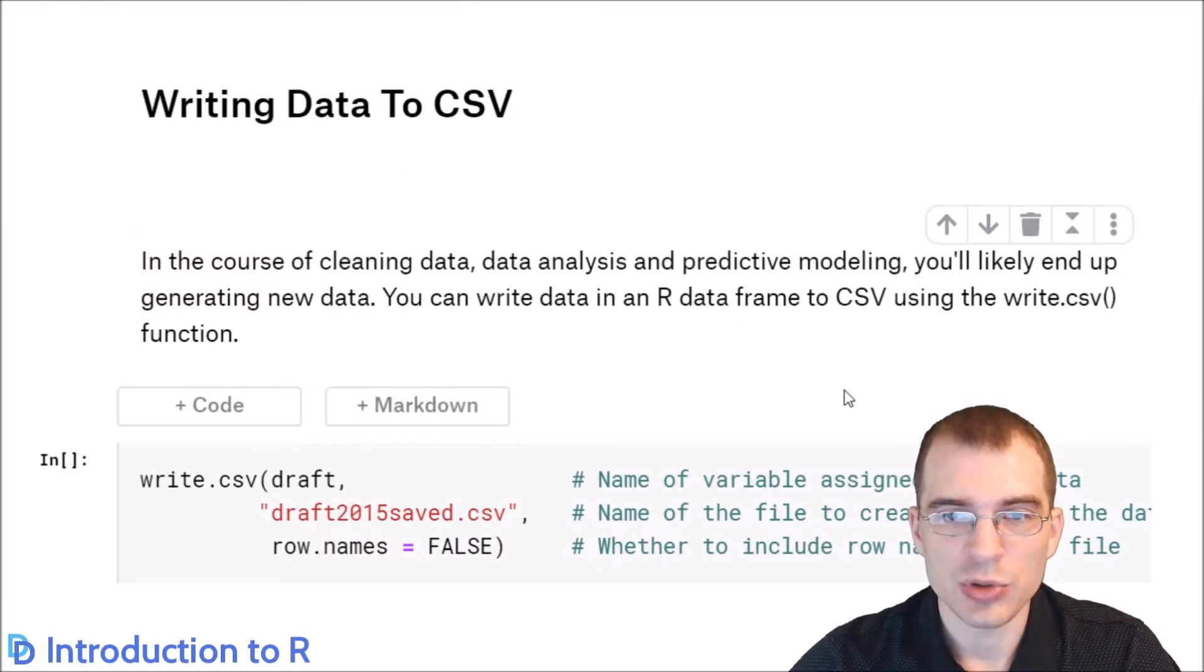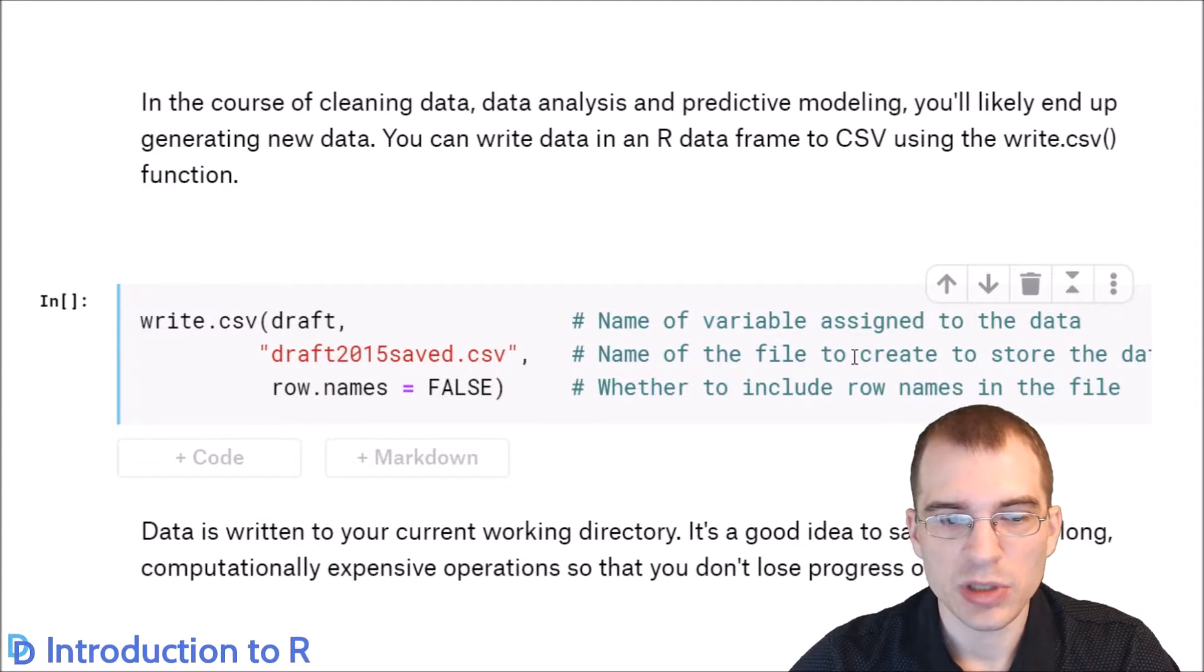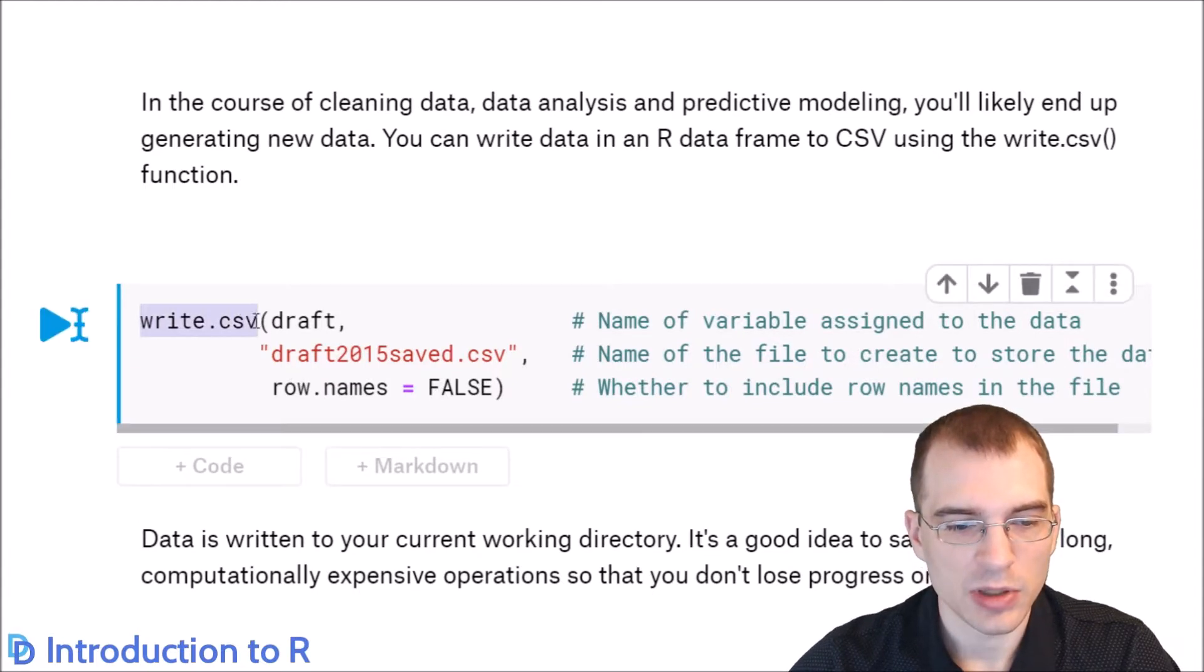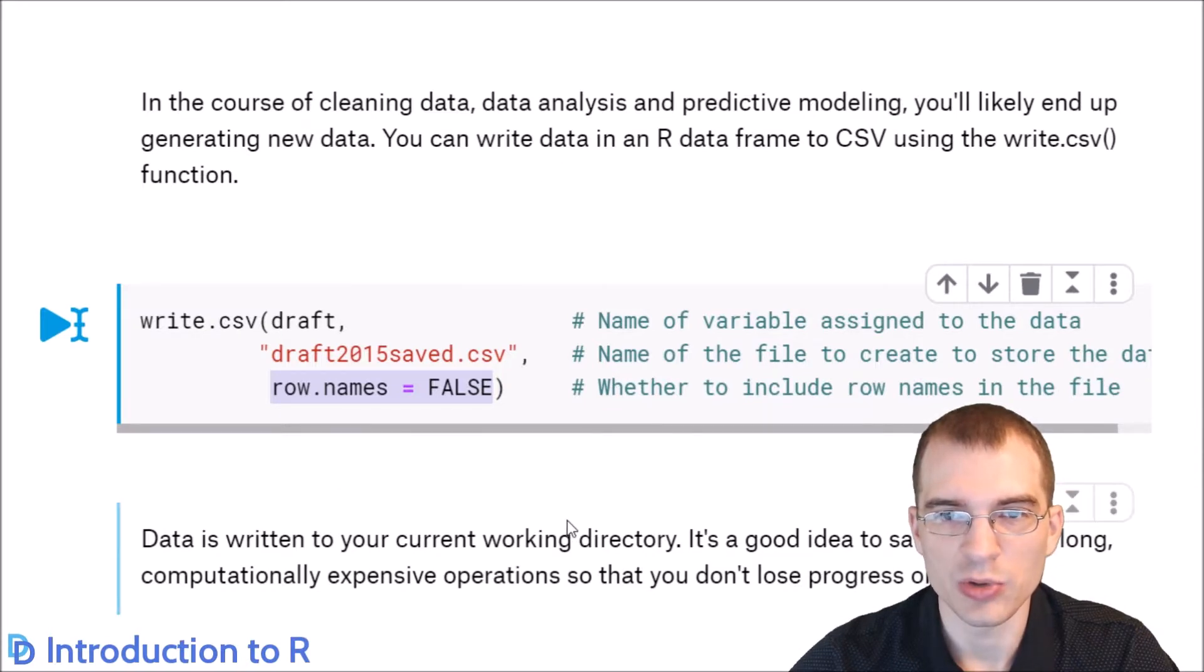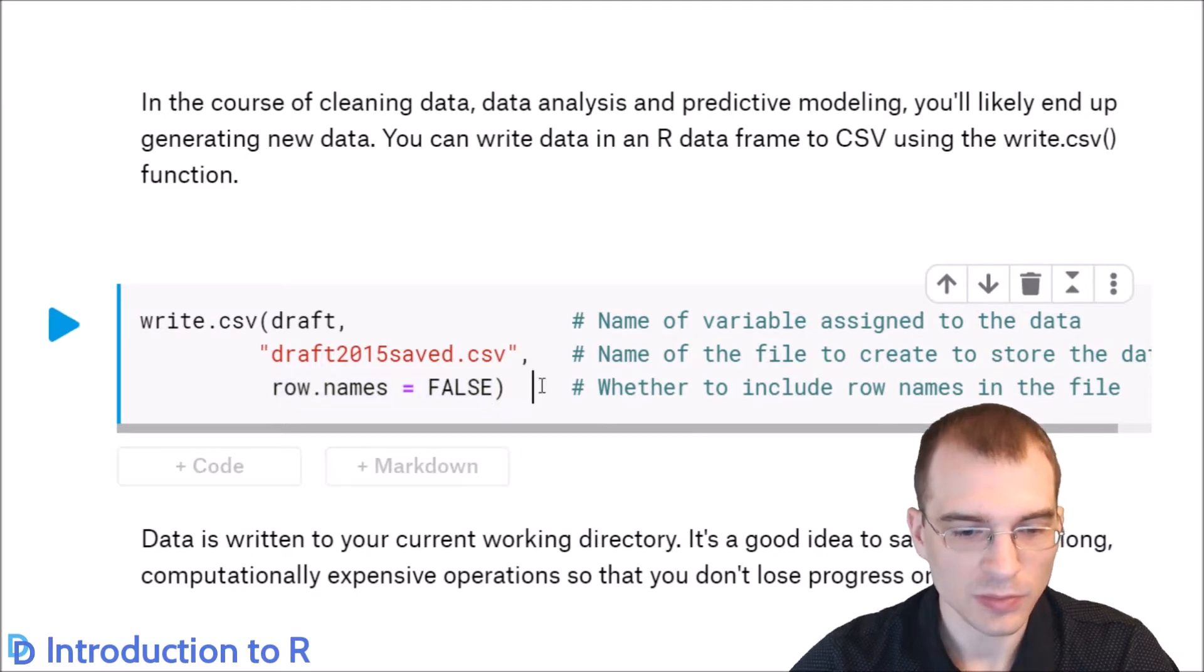Now that we learned how to read data into R, it'd be nice to learn how to write data we have in R back to a file. One simple way of doing this is a built-in function called write.csv. We're passing in the draft data as the data we're writing. The second argument is the name of the file you want to save it in. This extra argument, row.names = false, means we are not going to store the row names as an extra column. It won't produce any output, but it did write this to a file.